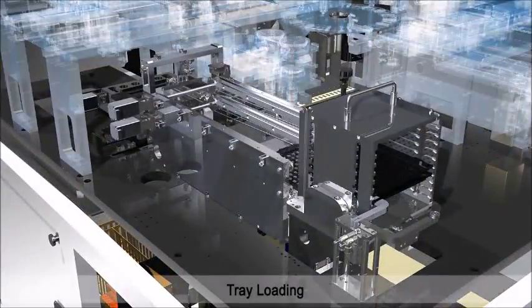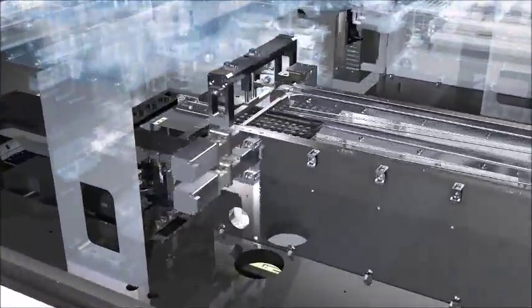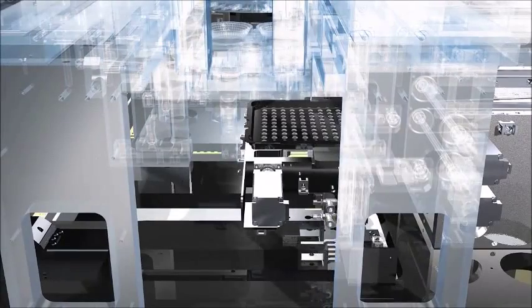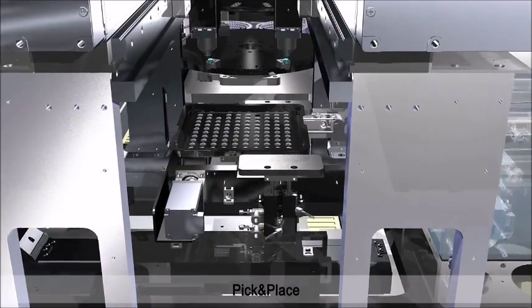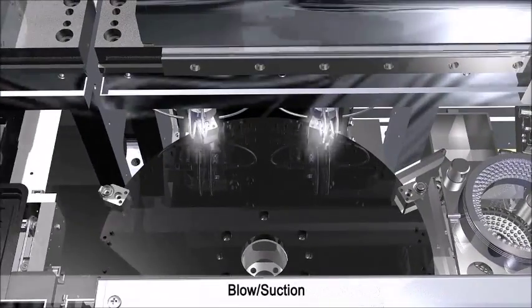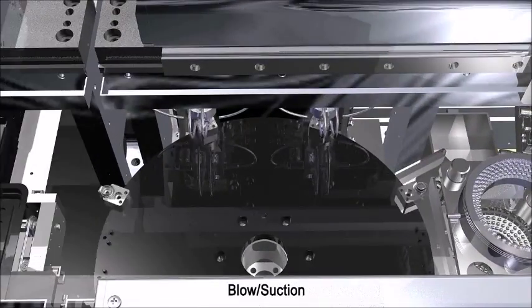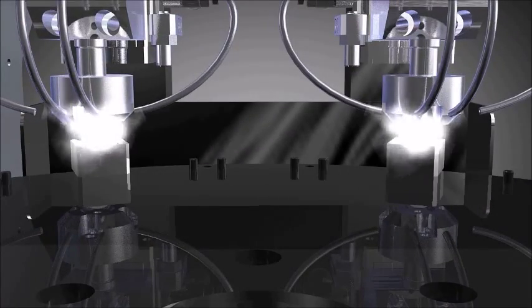A tray loads along the loading area. The loaded tray moves to the cleaning area by picker. In the cleaning process, foreign materials are eliminated by air blow suction.